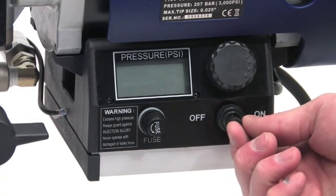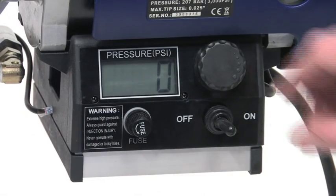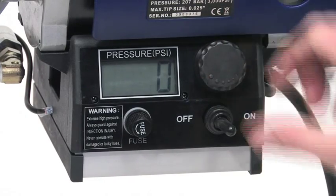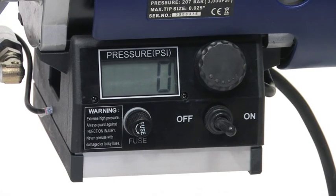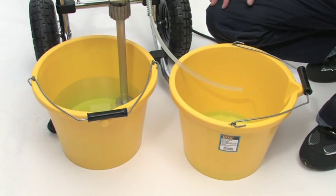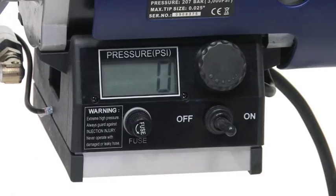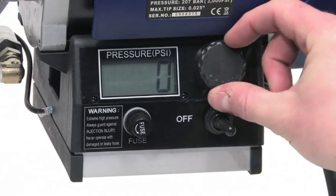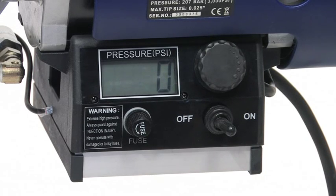Once the suction tube is fully submerged in water, turn the power switch to the on position. And then turn the pressure control knob right until the pump starts to operate. Let the water flow through the prime tube for about 30 seconds or so. And then turn the pressure control knob back to the left and stop the pump operating.